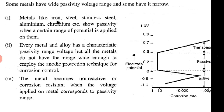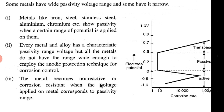Iron, steel, stainless steel, aluminum, and chromium are metals which show a very good passivity range. These metals can be protected by applying an external voltage equal to that of their passivity range. The metal becomes non-reactive or corrosion resistant when the voltage applied corresponds to the passivity range.